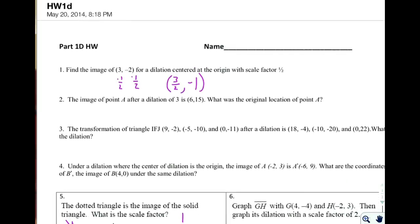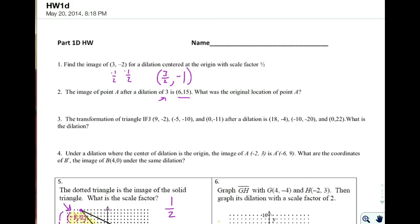Just scanning over the problems and what you're going to be looking at. Number two is doing this process in reverse. So this is the image. What was your original location when you had a scale factor of three? Number three, transformation of this triangle after a dilation is these sets of points. So just like number five, except we're not given a graph, we're just given the points. We have to figure out what the scale factor is.